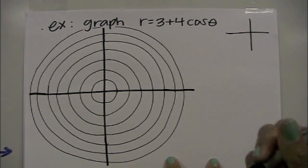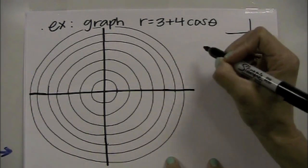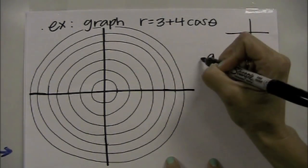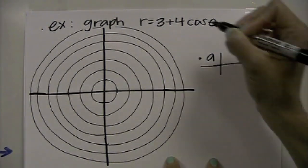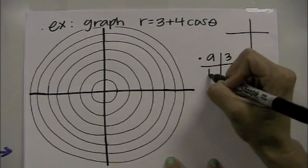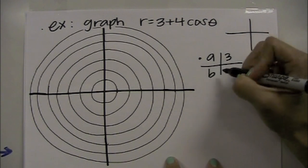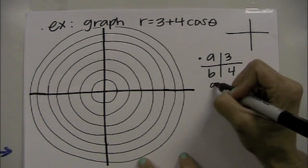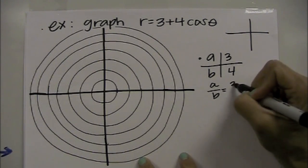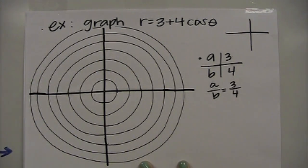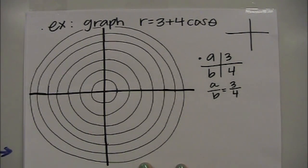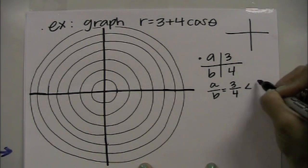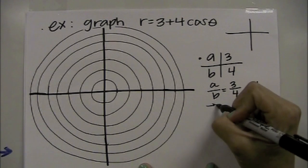Let's identify our a and our b. So a is 3, b is in front of the cosine, which is 4. So I'm going to look at the ratio a over b, which is 3 fourths. If you check the chart, a over b equaling 3 fourths is less than 1, so this graph will have an inner loop.